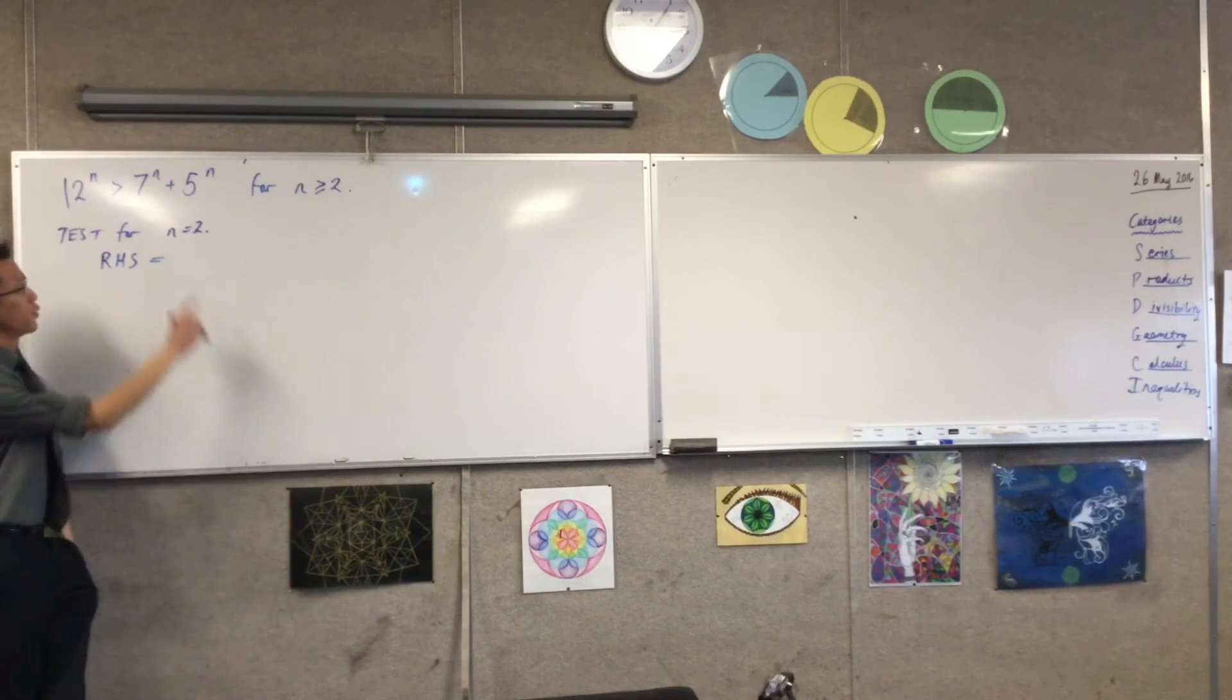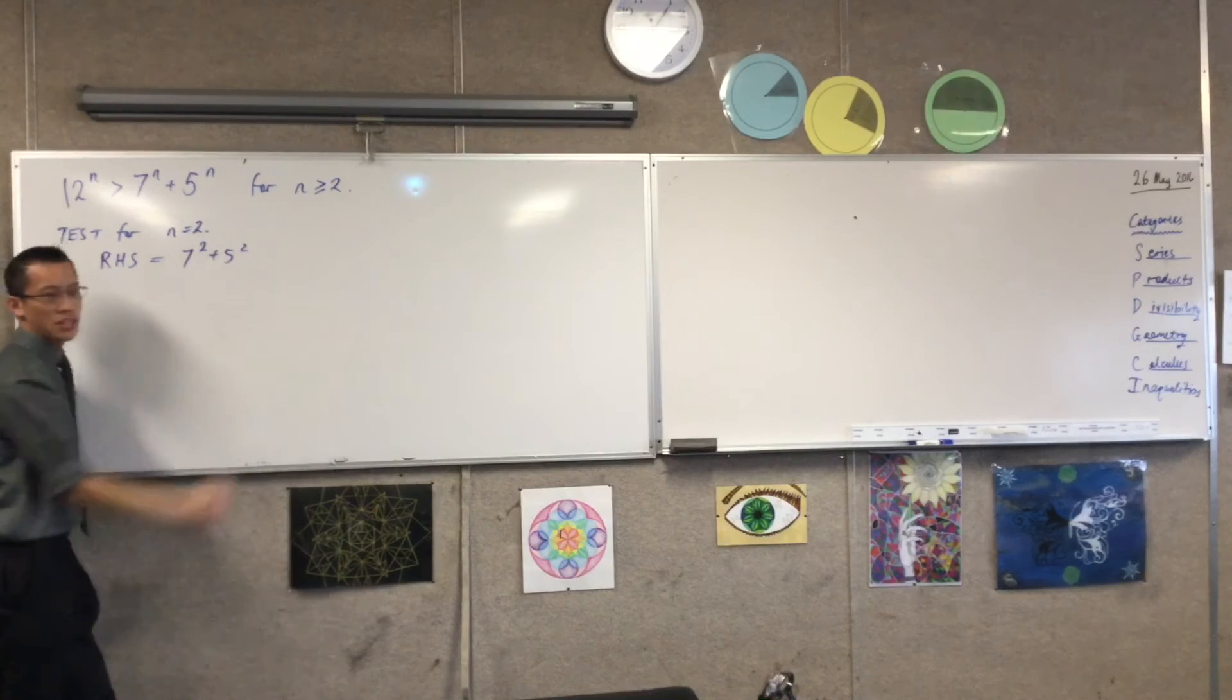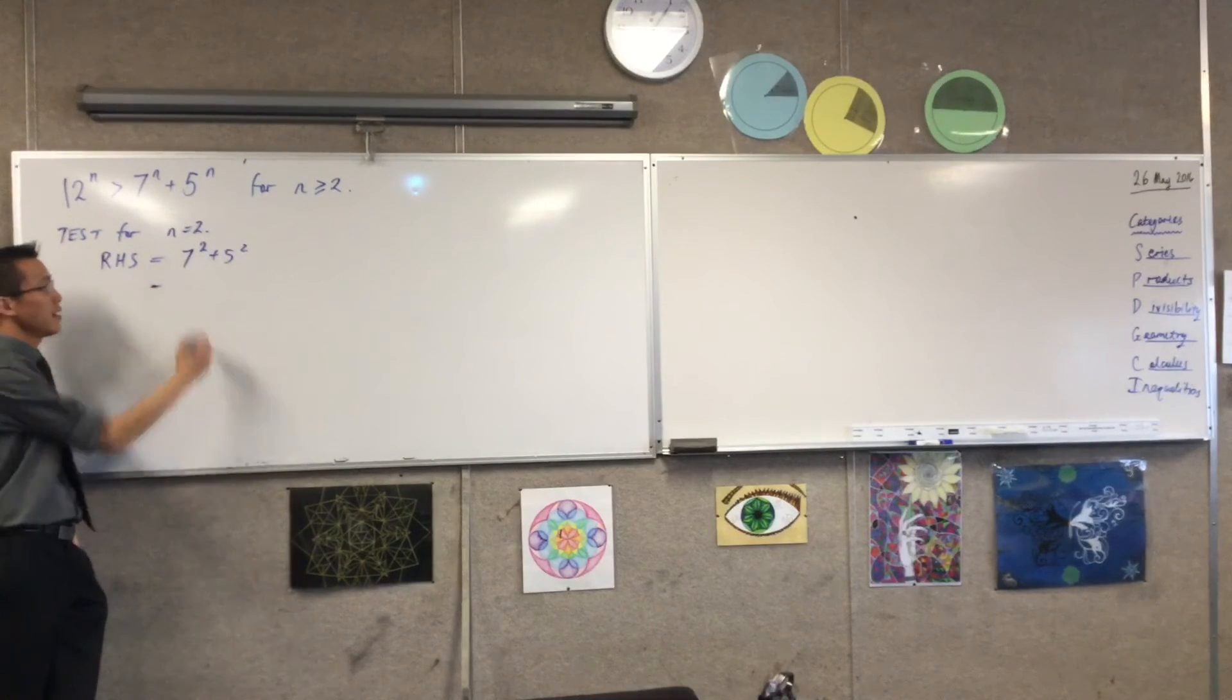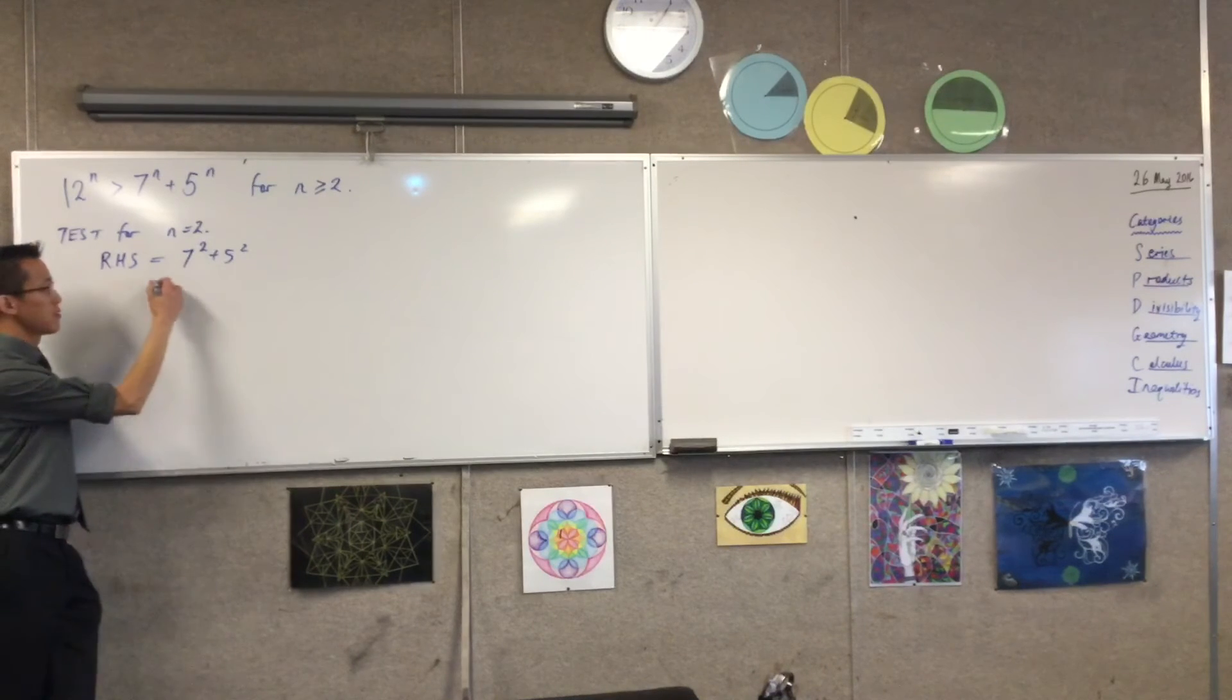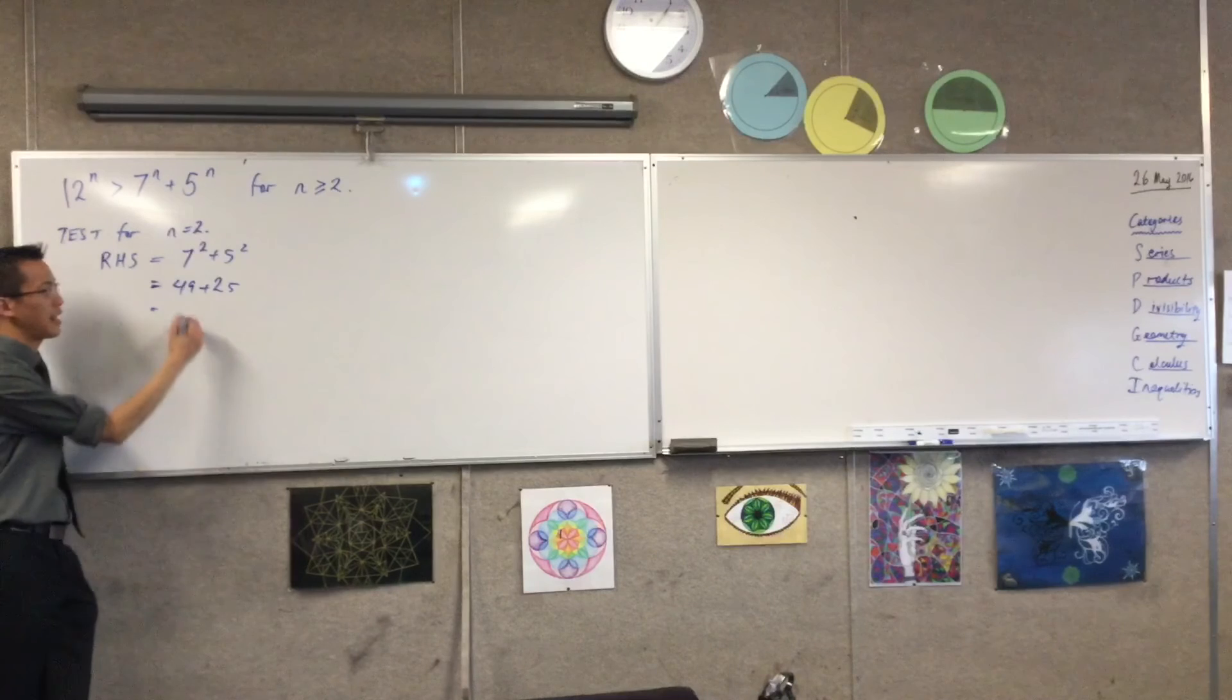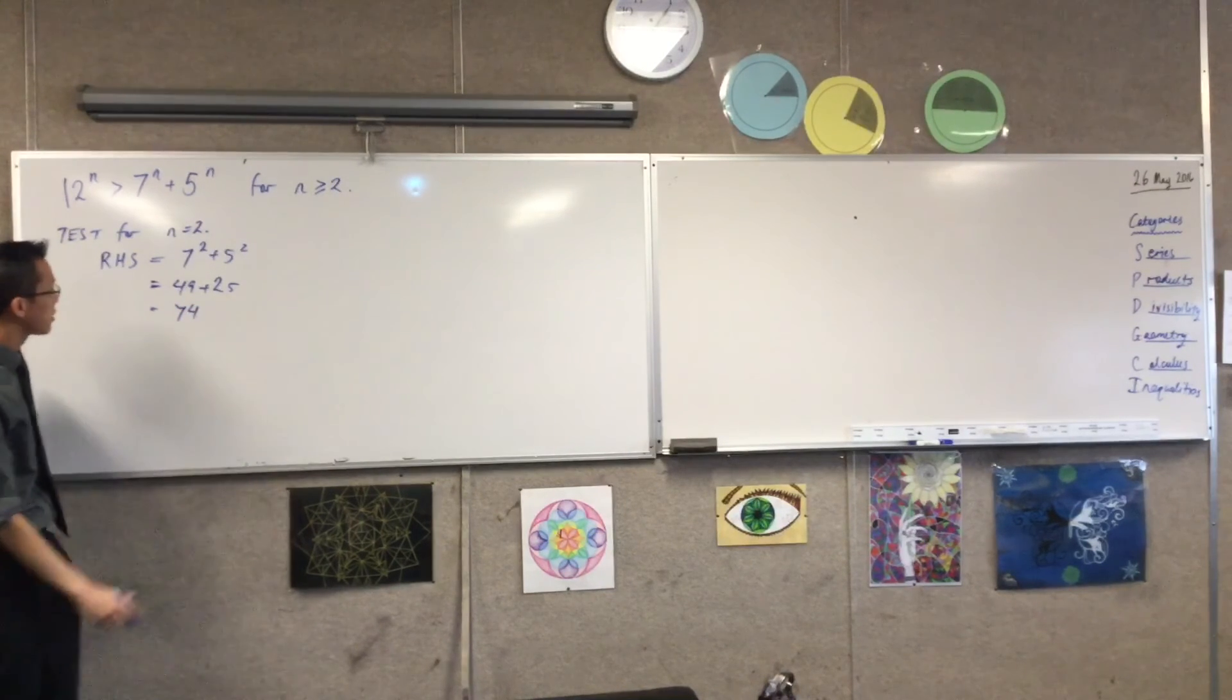What is the right-hand side equal to when n equals 2? Well, as I've mentioned before, you don't take any shortcuts on the first line. You substitute in directly. 7 squared is 49 plus 25. So, it looks like I'm getting 74. So, I have a number for the right-hand side.